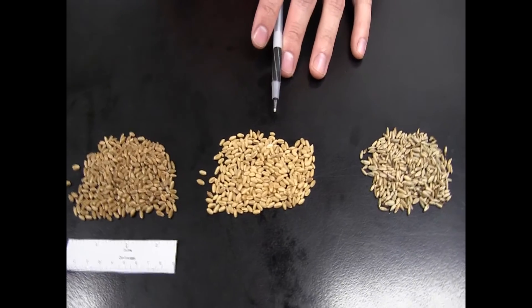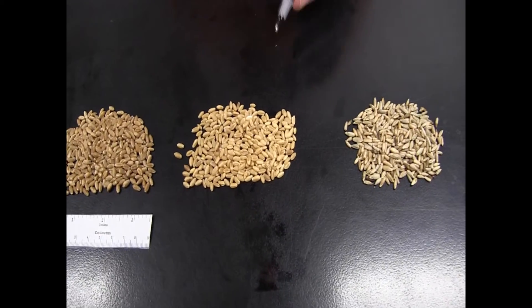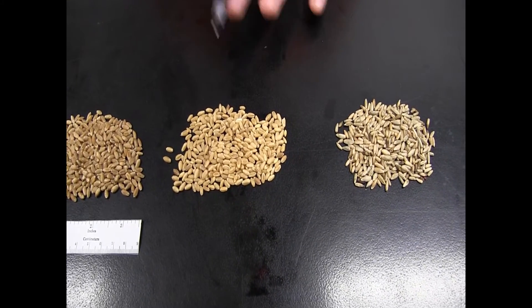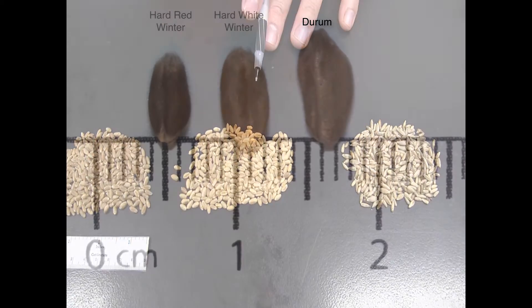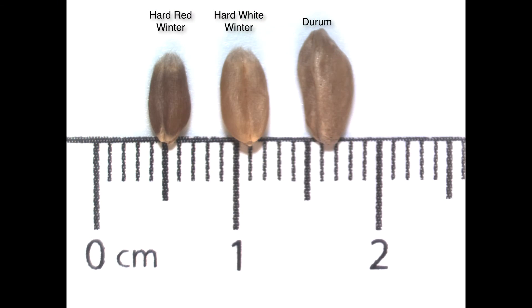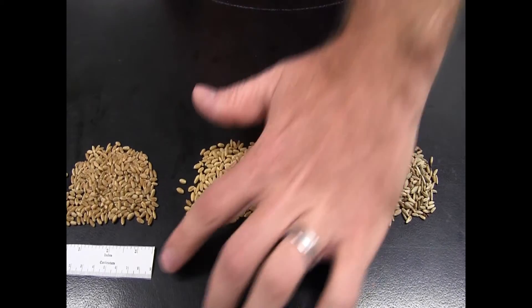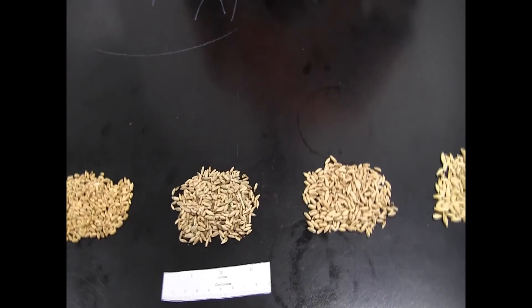Now let's look at a sample of hard white winter wheat. Overall, the size and shape of the hard white winter wheat is going to be very similar to our other sample. It's going to have those small hairs on the opposite end from the germ. But you can see that the color of the hard white is a lot lighter — it's not white, but it's noticeably lighter compared to the hard red winter wheat.